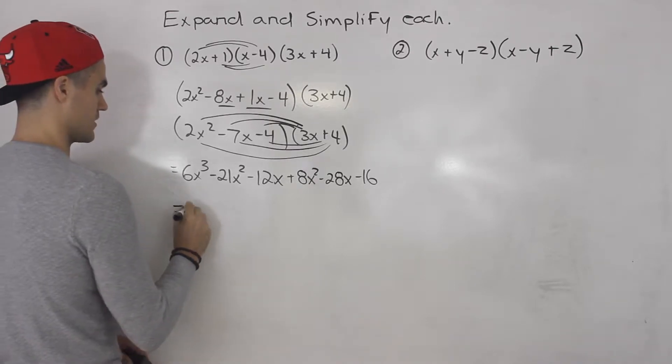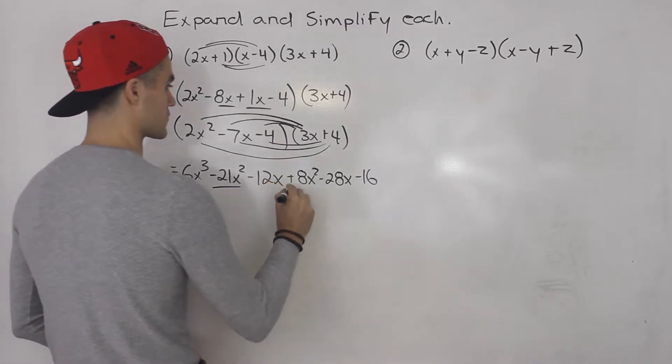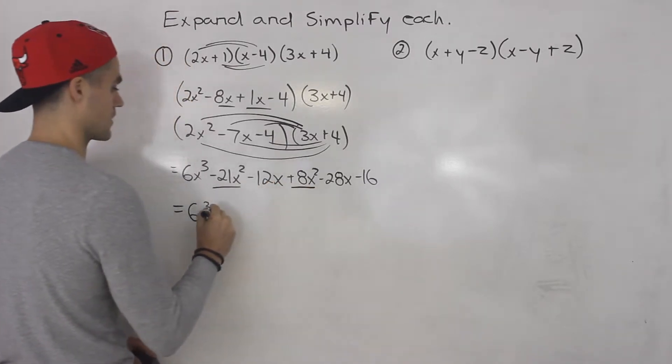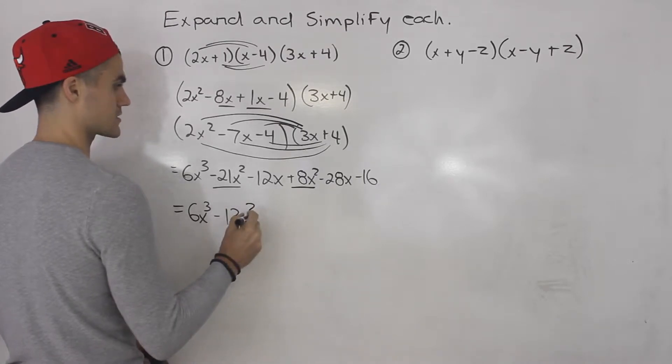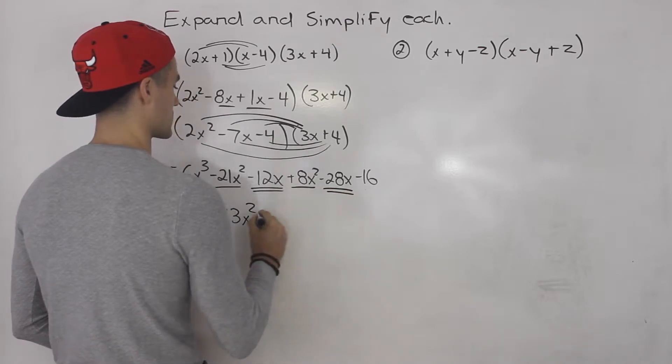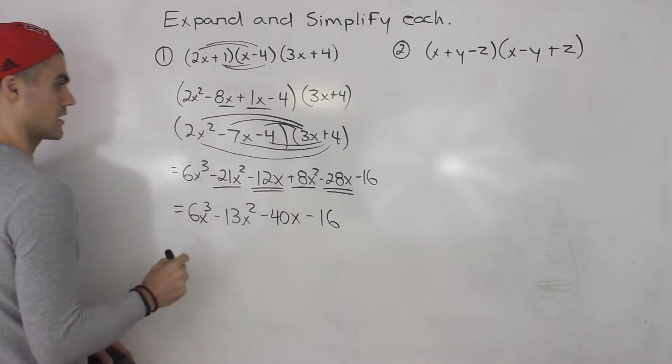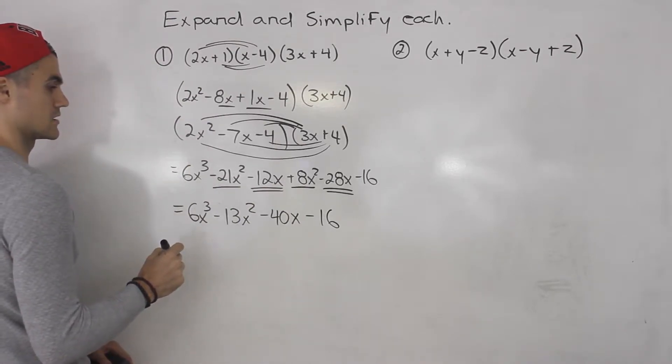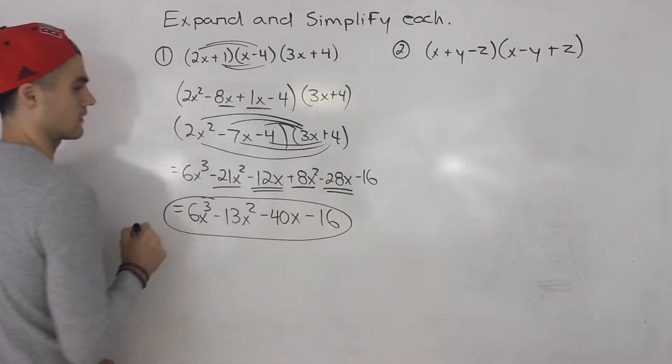So this here, 6x cubed, then minus 21x squared plus 8x squared would give us minus 13x squared. And then minus 12x minus 28x would give us minus 40x. And this would be minus 16. So that there is your final answer.